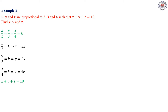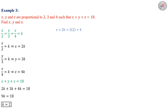In the second part of the given, we have x + y + z = 18. We replace x by 2k, y by 3k, and z by 4k. Then we get 2k + 3k + 4k = 18, which gives 9k = 18, therefore k = 18/9 = 2. We have found the proportionality constant k = 2. Now: x = 2k = 2 × 2 = 4; y = 3k = 3 × 2 = 6; z = 4k = 4 × 2 = 8.